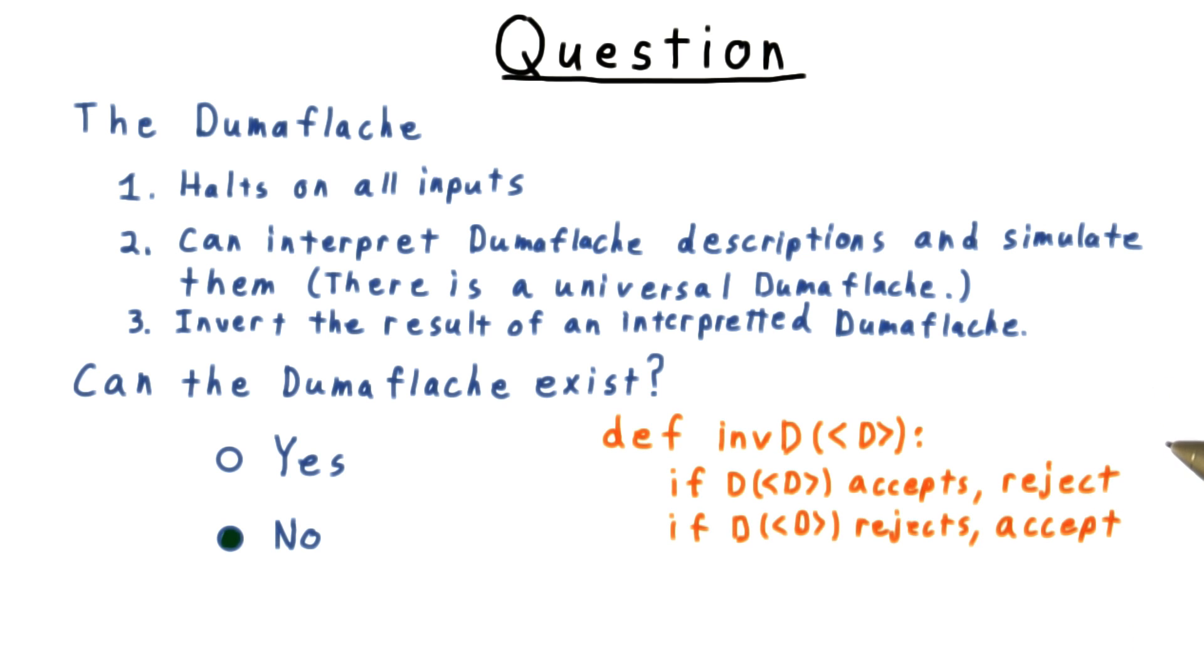If the Duma-Flichy did exist, then we could create a program like this one, which I'll call inverse d. It takes a Duma-Flichy description as input and simulates it on itself. If this simulation accepts, then inverse d rejects. And if this simulation rejects, then inverse d accepts.